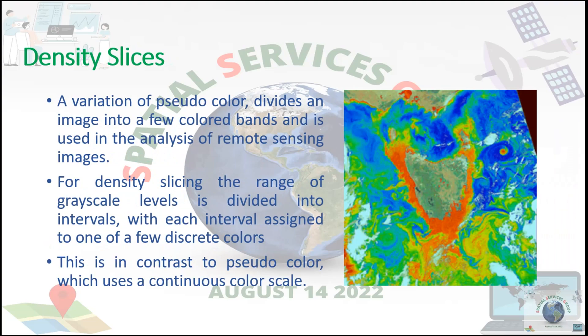Density slices: a variation of pseudo color that divides an image into a few colored bands, used in the analysis of remote sensing images. For density slicing, the range of grayscale levels is divided into intervals, with each interval assigned to one of a few discrete colors. This is in contrast to pseudo color, which uses a continuous color scale.